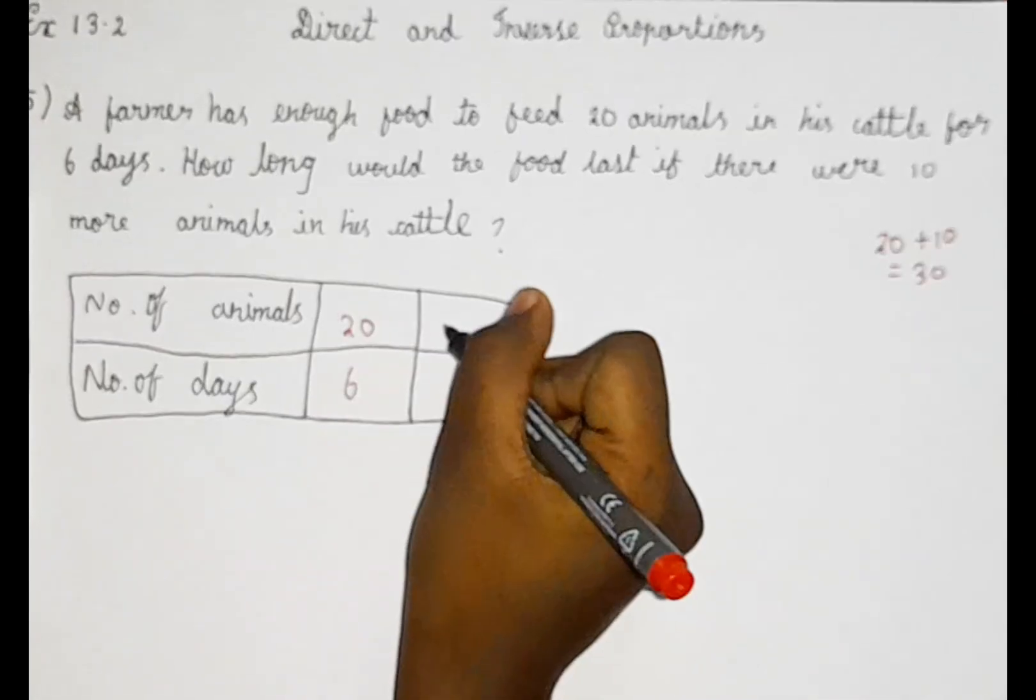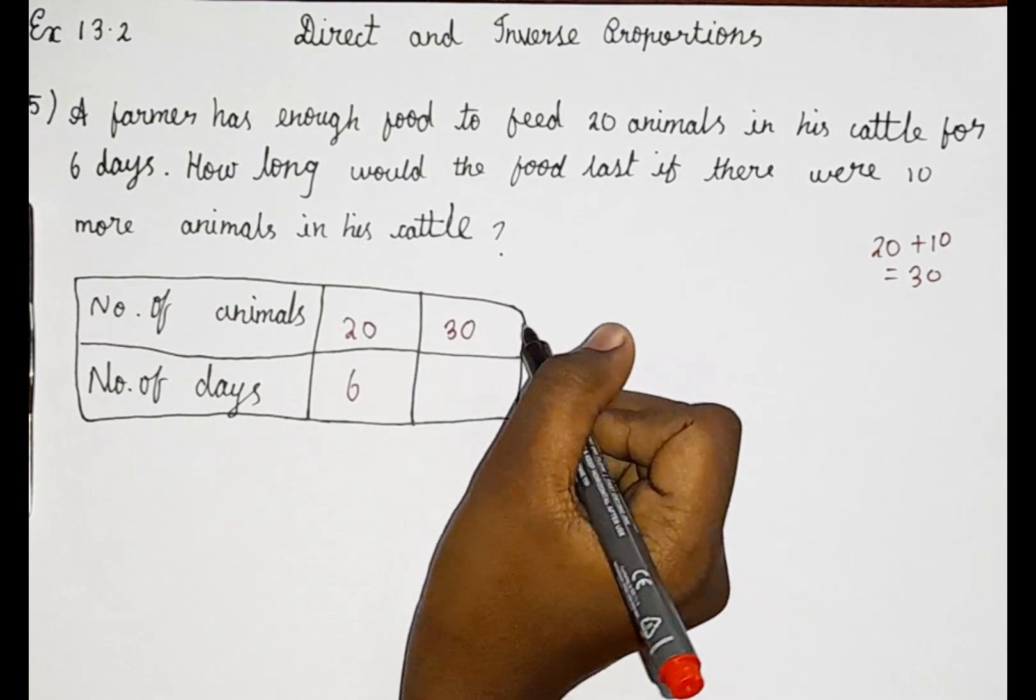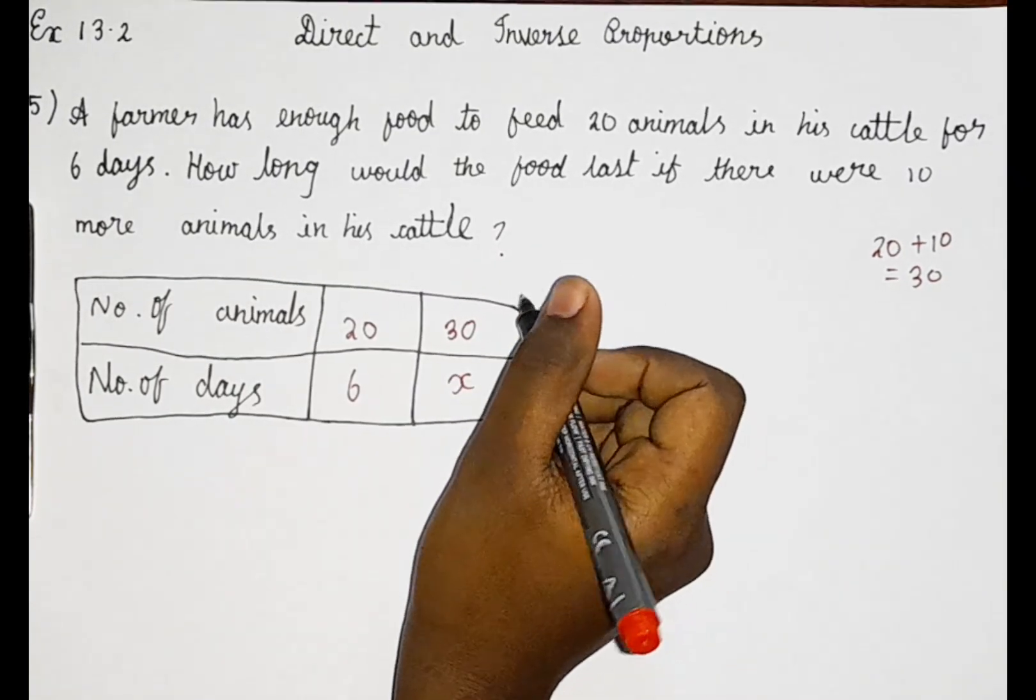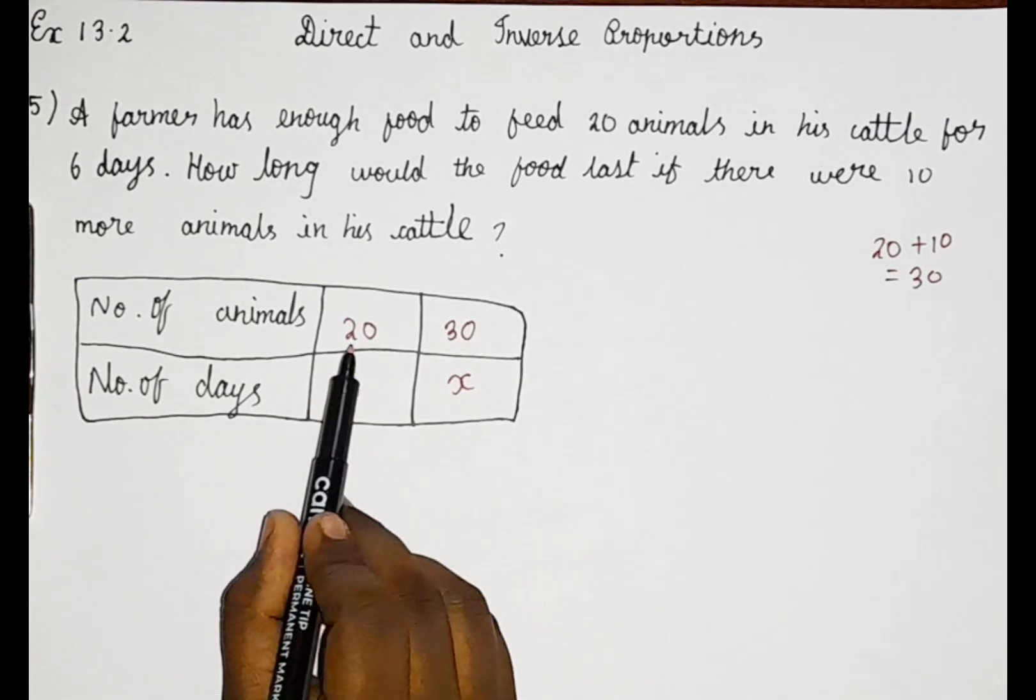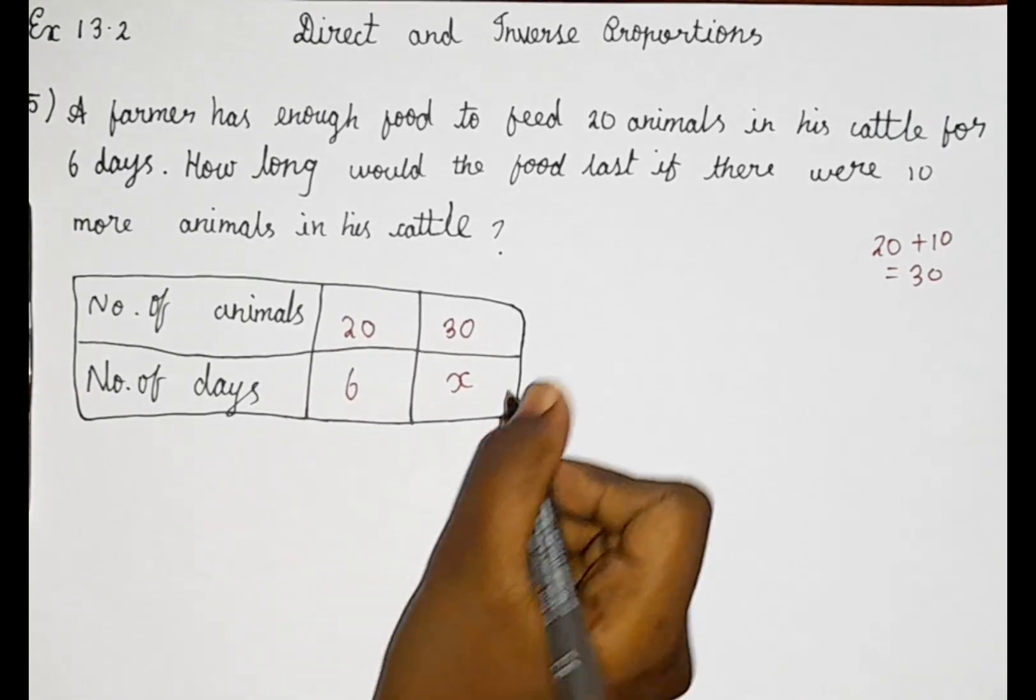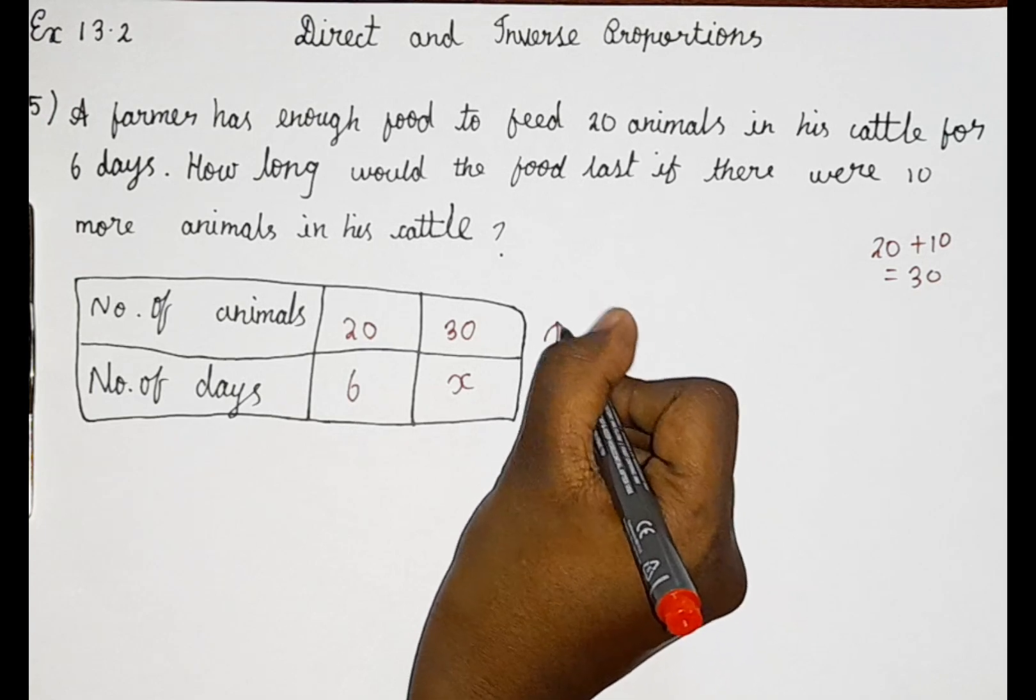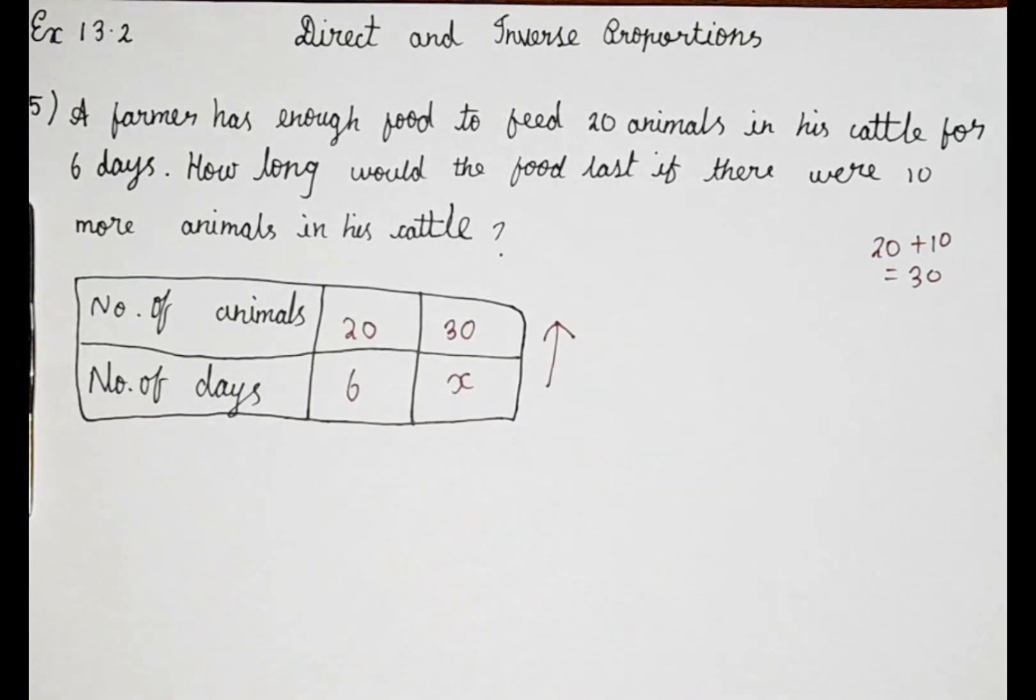If 30 animals are there, how much food would be required? Here you can see 20 and 30. Compared to 20, it is increasing to 30. If the number of animals is increasing, the food will decrease, right?